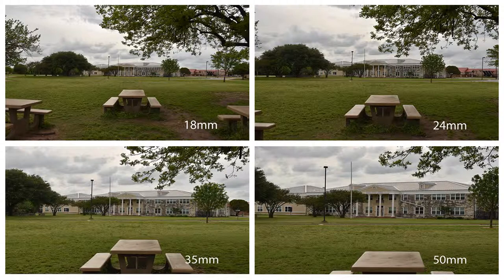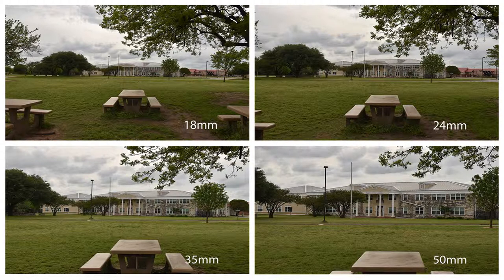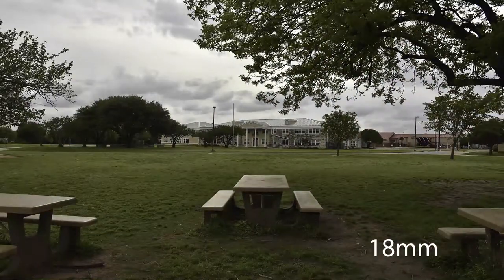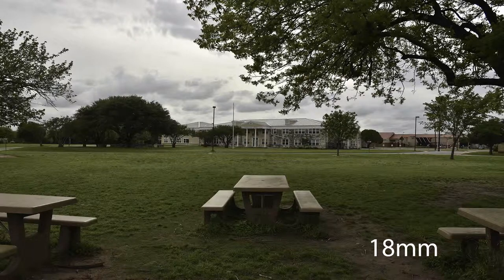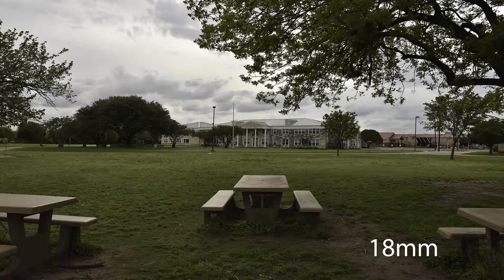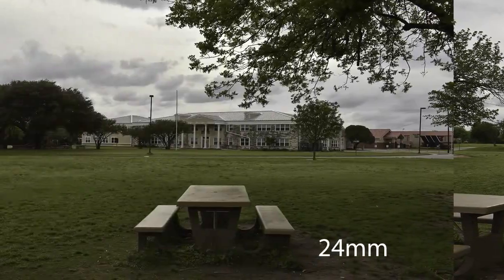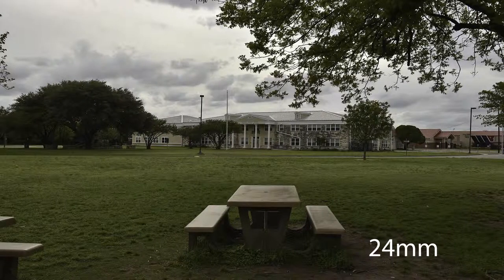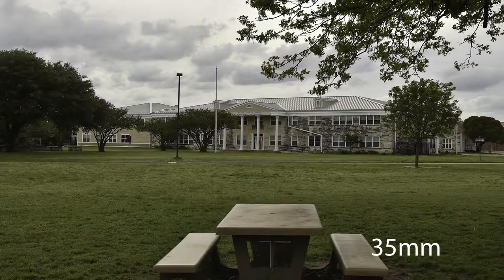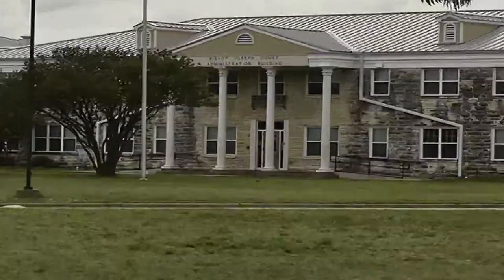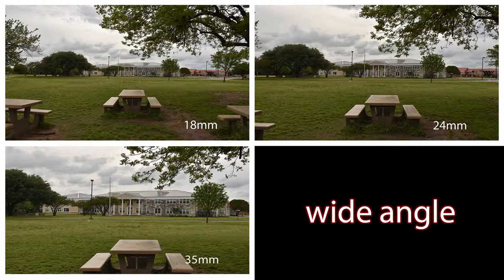These are some photos that I took recently at the Rappaport Academy High School in Waco, Texas. We're starting off with a really wide angle—this is an 18 millimeter focal length which gives you a really wide field of view. We graduate from 18 to 24, and also 35. All three of these are going to be categorized as wide angle, and rightfully so, you can see that.